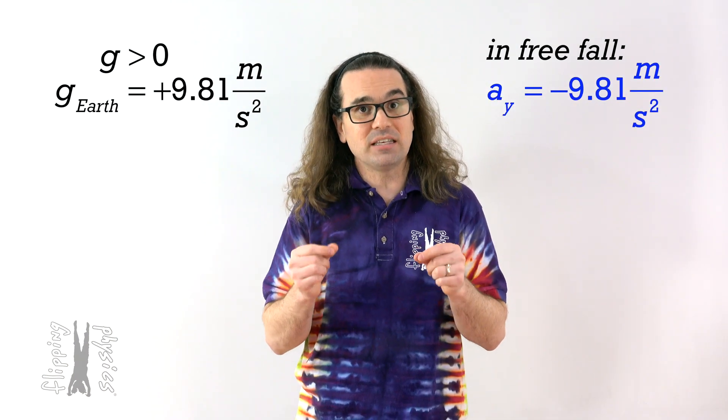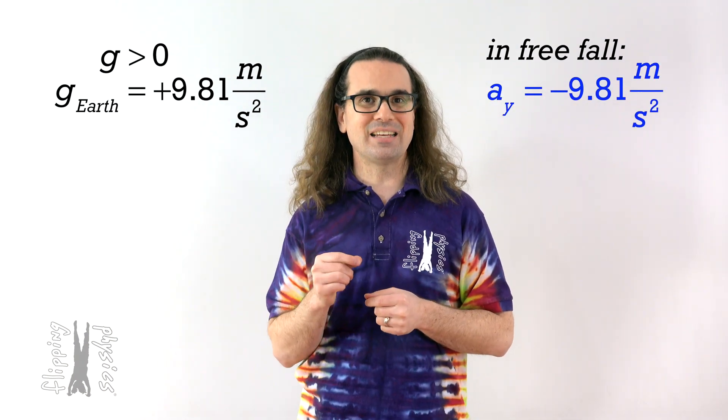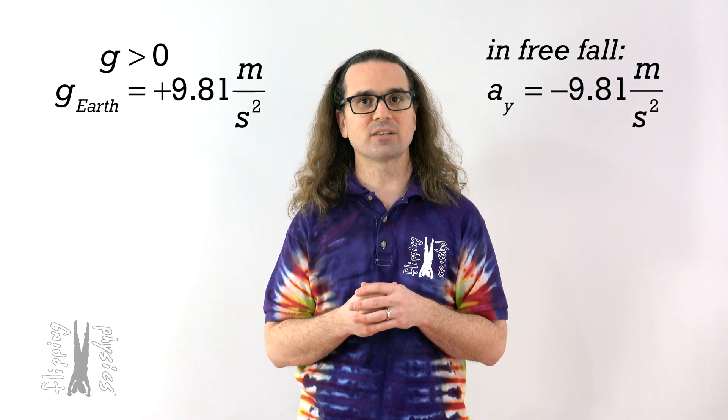the acceleration of the object in the y direction was equal to negative 9.81 meters per second squared. Exactly. Negative 9.81 meters per second squared. Right. Negative. I think we should keep listening. So again, I understand because the acceleration of the object was always negative 9.81 meters per second squared in each of these problems, students tend to infer that the acceleration due to gravity is also negative 9.81 meters per second squared.